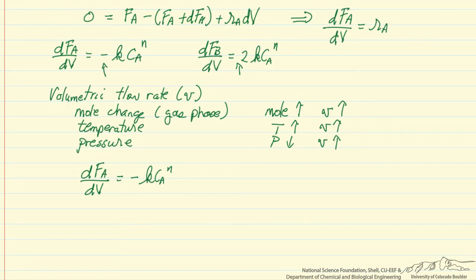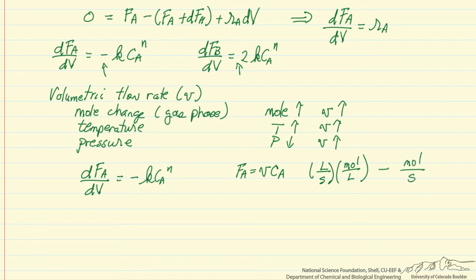One consequence is that if we look at the mole balance of A, and keep in mind that the molar flow rate is the volumetric flow rate times the concentration — volumetric flow rate in liters per second times concentration in moles per liter gives molar flow rate in moles per second — the temptation might be to write this as the derivative of v·C_A with respect to V. But we cannot bring v outside of the derivative sign, so instead we need to replace C_A in terms of the molar flow rate of A and the volumetric flow rate.